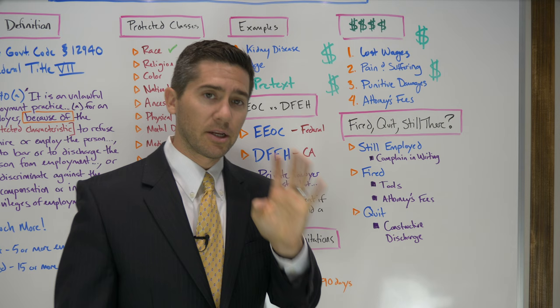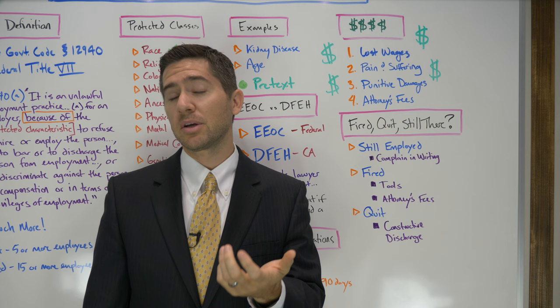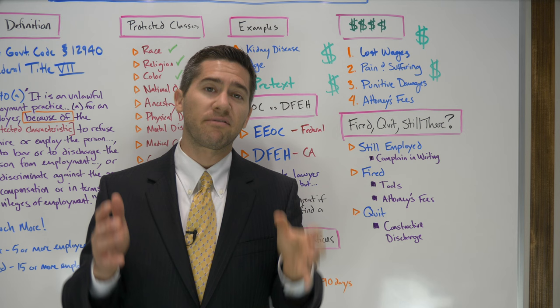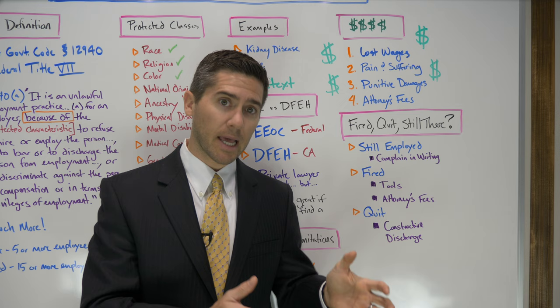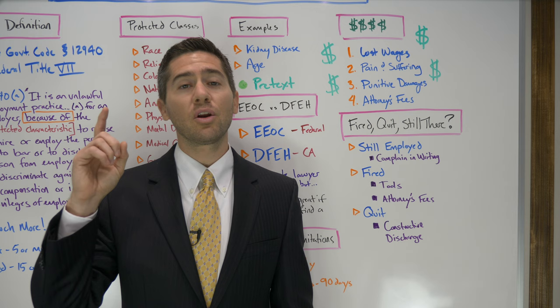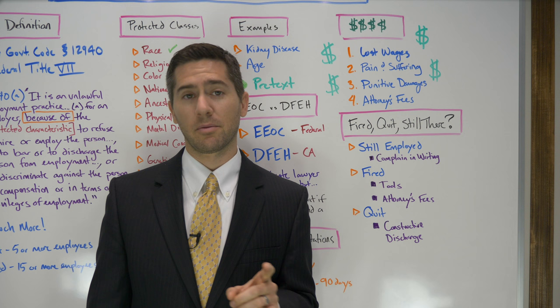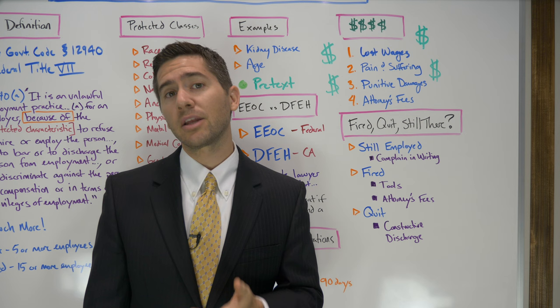Lost wages are the lost salary, benefits, commissions, hourly wages, bonuses, et cetera that you're no longer earning because you were fired. For example, if you were making $85,000 a year and were discriminated against and fired, you can recover those lost wages — also known as economic damages. But you can only recover lost wages if you are terminated. Unless extraordinary circumstances exist, the law doesn't let you recover these if you voluntarily quit or if you're still employed.